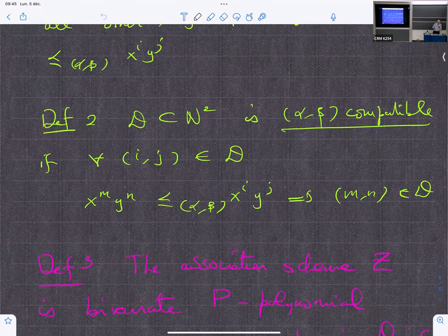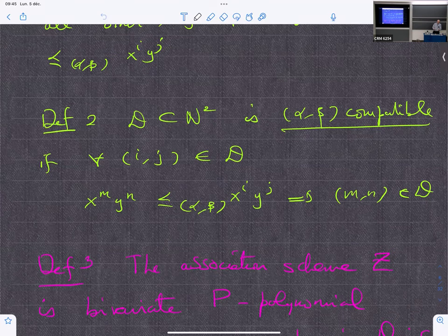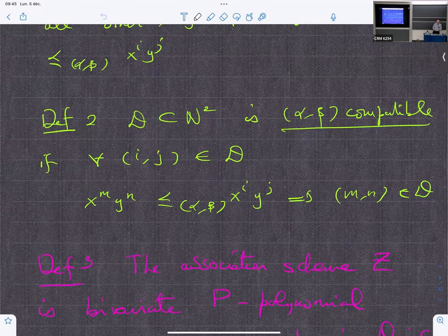Such that all the other monomials occurring in the polynomial have a lower degree. What is key in the definitions I will give is the following partial order.